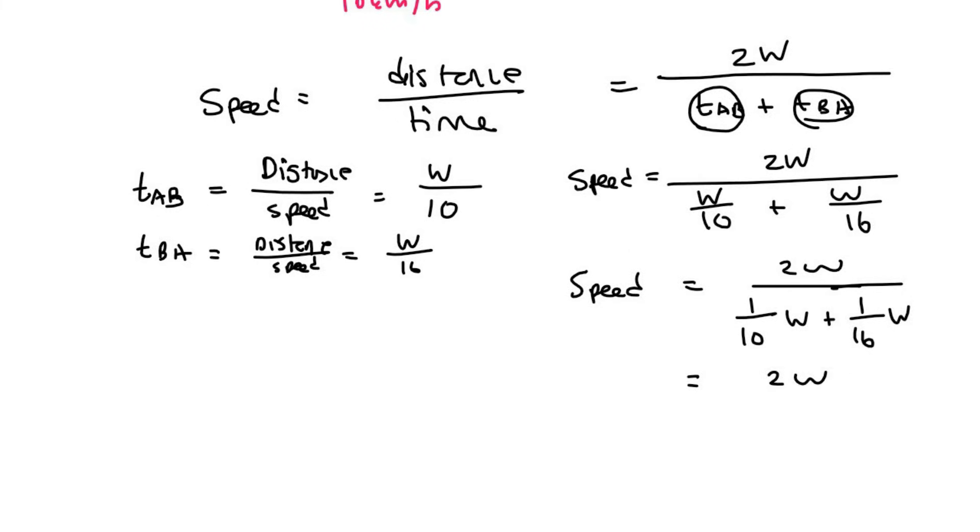And so that's going to give us 0.1625 W. Now, what's really cool is that these Ws are just going to cancel out. And so the average speed is going to be 2 divided by 0.1625. And that's going to give us 12.31 kilometers per hour. And didn't we say that the speed is going to be closer to the 10 than the 16? And so 12.31 kilometers per hour is our final answer.